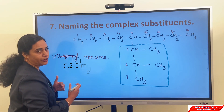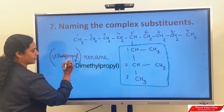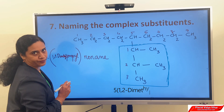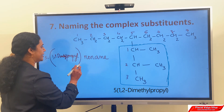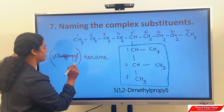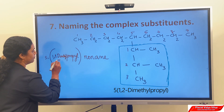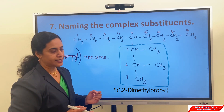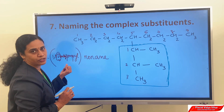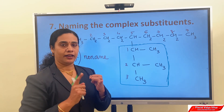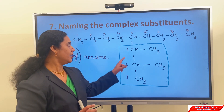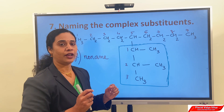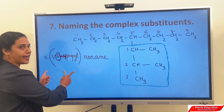So in order to avoid confusion with the parent chain, we put the name in brackets. Before the bracket, indicate the number of the carbon atom to which the complex substituent is attached. For complex substituents, you have to consider the first alphabet inside the bracket for alphabetic priority. The main rules for complex substituents are: first, the name is always written in brackets; second, give number 1 to the carbon directly bonded to the parent chain; and third, for alphabetic order, consider the first alphabet inside the bracket.